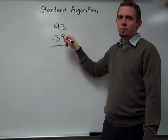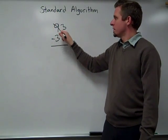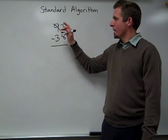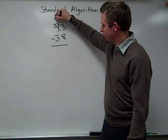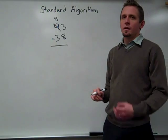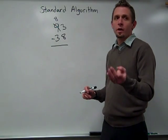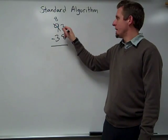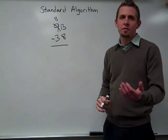So to take 8 ones away, we need to borrow from our tens. So if I take a 10 from 90, I now have 80. And I take that 10 that I borrowed and break it into ones. So now I have 10 that I add to the 3. So now I have 13 ones.